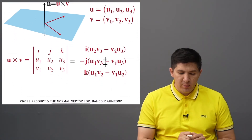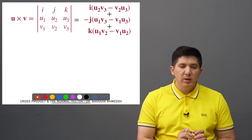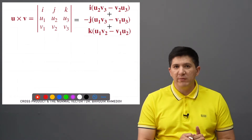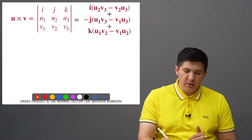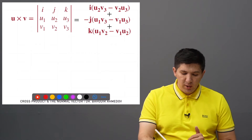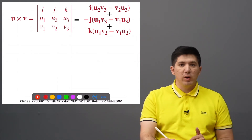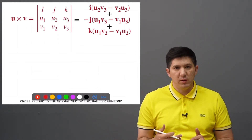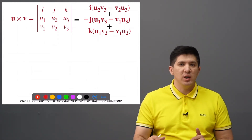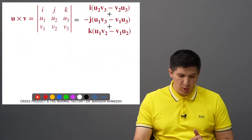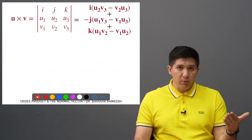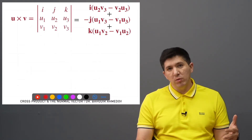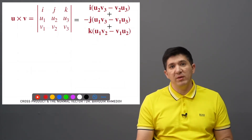If you are given vectors u and v and you'd like to find their cross product, first you need to create a matrix. On the first row, write down i, j, k — the standard unit vectors, where i = (1,0,0), j = (0,1,0), and k = (0,0,1). On the second row, write down the components of u, and on the third row, write down the components of v.